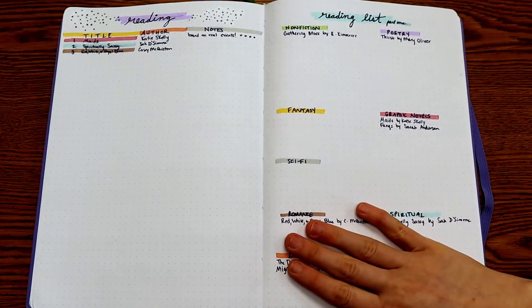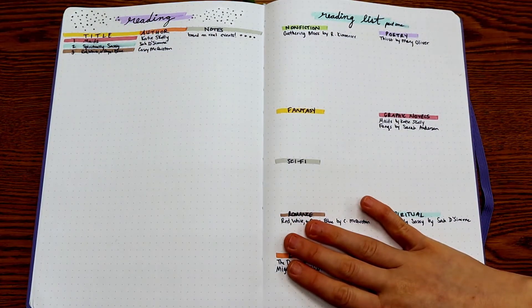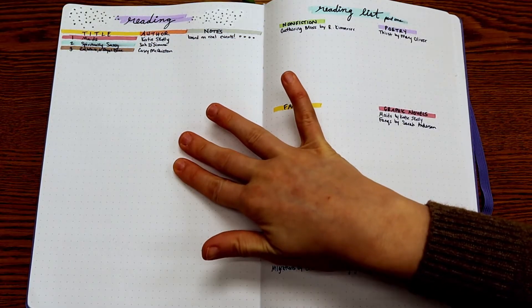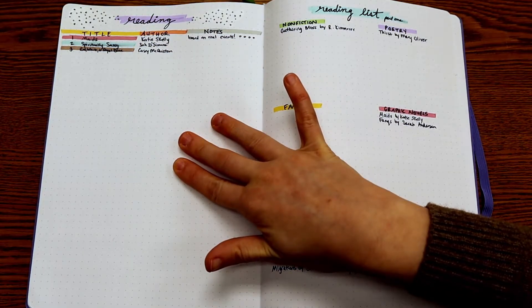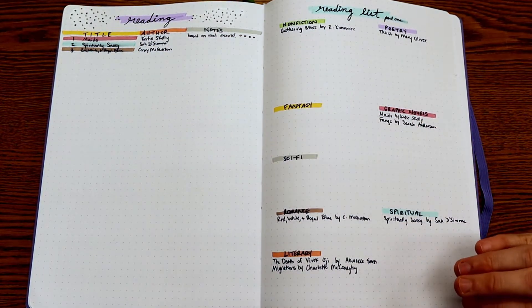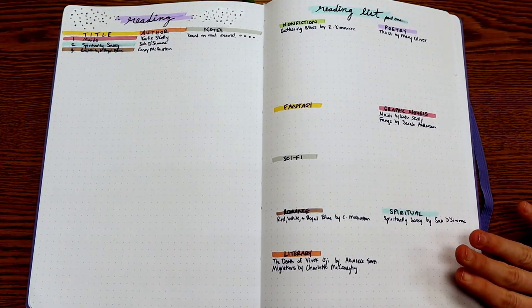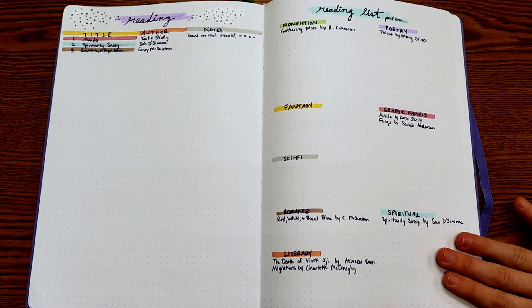So these are my extra blank pages in the back of my planner. On the left, I have my currently reading. So I'll write a book down here whenever I start reading it. And then on the right, I have my reading list. So this is like my reading wishlist of things that I really want to read this year.